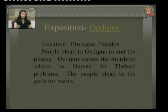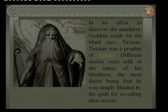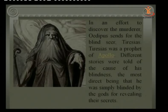In an effort to discover the murderer, Oedipus sends for the blind seer Tiresias, the prophet of Apollo. Different stories are told of the cause of his blindness — the most direct being that he was blinded by the gods for revealing their secrets. One story says he saw the goddess Athena bathing, and she cursed him with blindness.